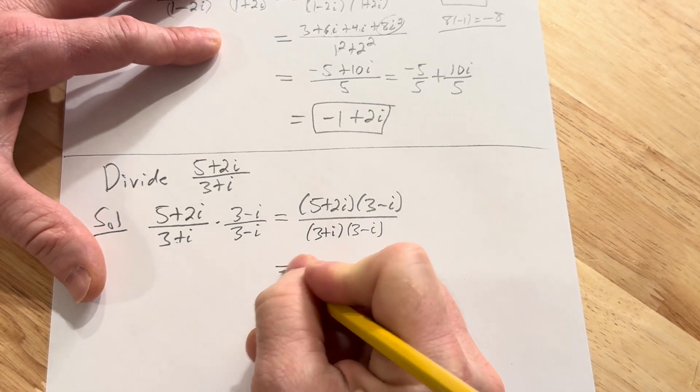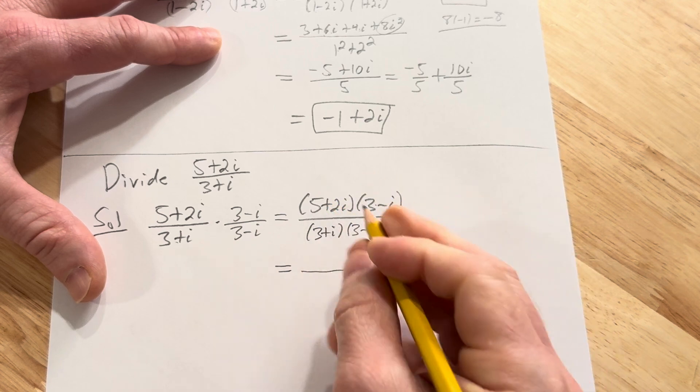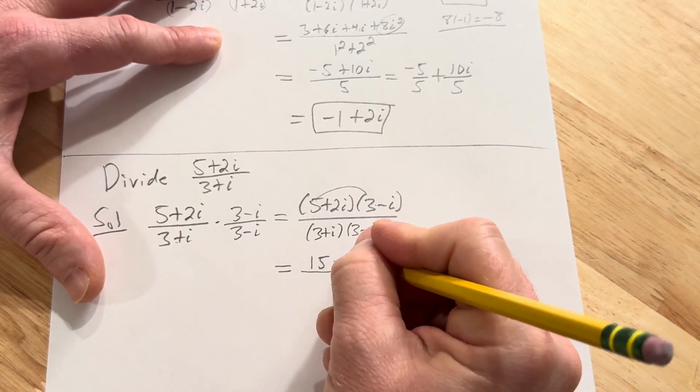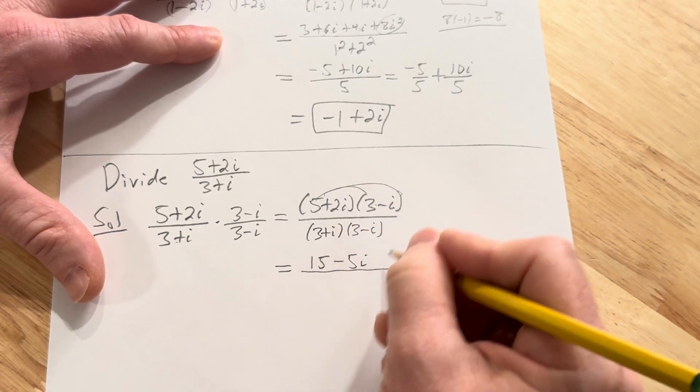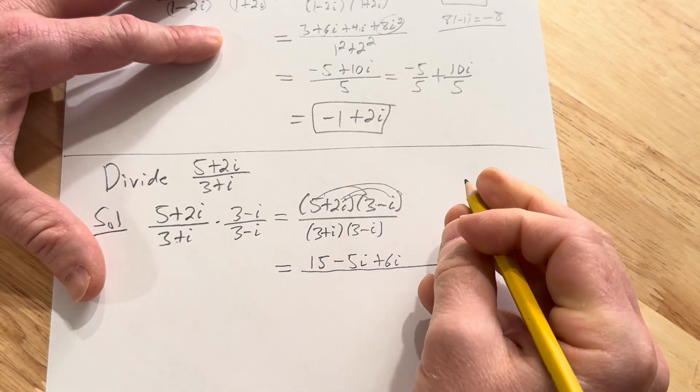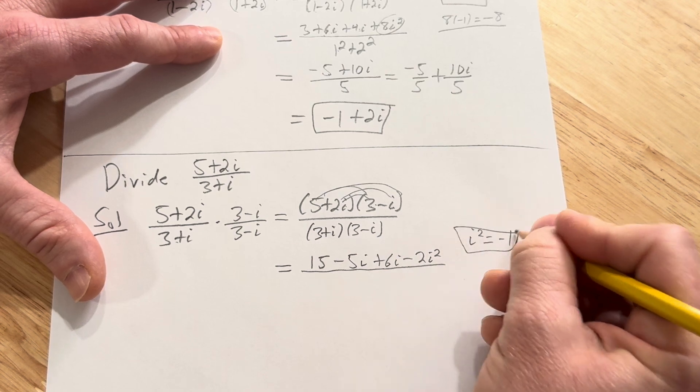Good stuff. And I'm going to do the same thing I did last time. I'm going to write it again under one fraction just to keep the procedure the same. And then again I'll write the denominator down again: 3 plus i times 3 minus i. This is equal to... Let's distribute. 5 times 3 is 15. 5 times negative i is minus 5i. And then 2i times 3 is 6i. And then 2i times negative i is negative 2i squared.